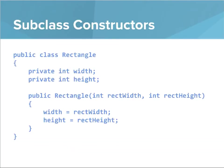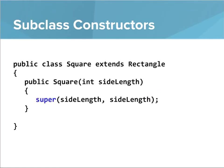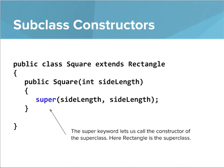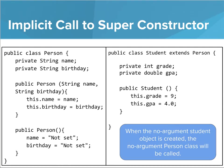Now we're going to talk about subclass constructors. We'll start with a simplified version of our Rectangle class — it has a width and a height and a constructor that sets it up. Now let's look at the Square class. We say that Square extends Rectangle because a square is a more specific type of rectangle. When we define the Square constructor, we use the `super` keyword. The `super` keyword lets us call the constructor of the superclass, which is Rectangle. So we're calling the Rectangle constructor with the value `sideLength` — the side length for a square is both the width and the height.